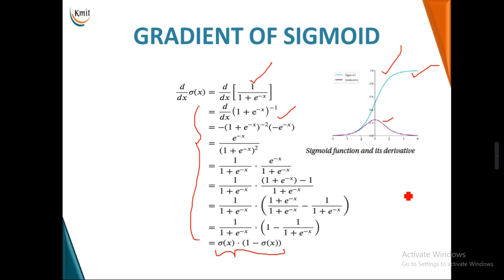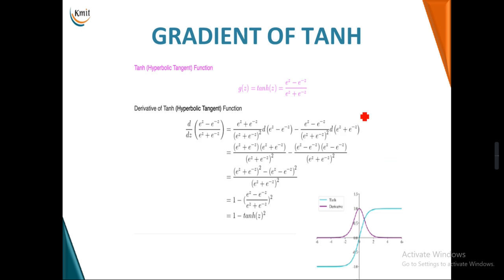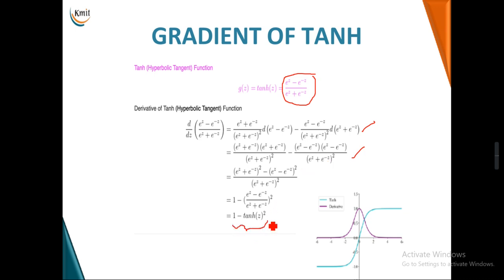Next is the tanh function, mathematically written as (e^z − e^(−z)) / (e^z + e^(−z)). Applying the derivative using the u/v formula — (u·v' − v·u') / v² — and rearranging it mathematically, we again express the result in the form of the tanh function.